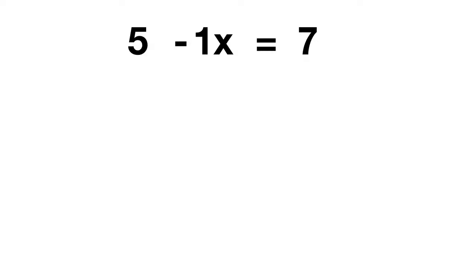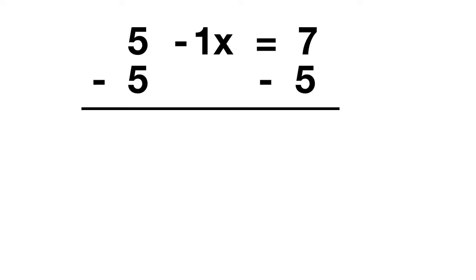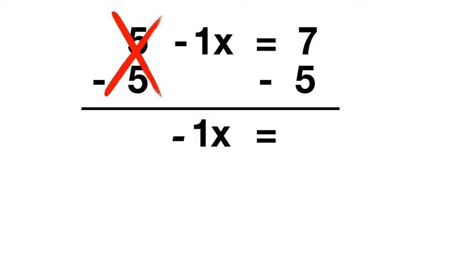Remember that you should try and get rid of addition and subtraction first. So rather than worry about the minus 1x, let's focus on the 5. To cancel the 5, you can just subtract 5 from both sides. When you solve this out, 5 minus 5 cancels out, so you're left with just negative 1x. On the other side, you have 7 minus 5.